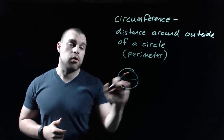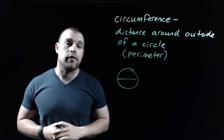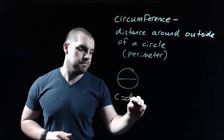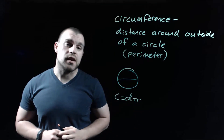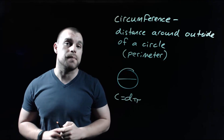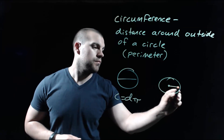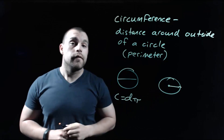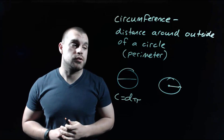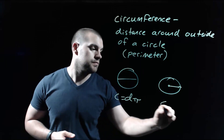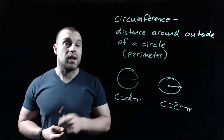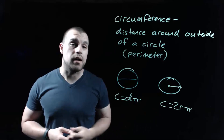Remember, a diameter goes all the way across the middle of our circle, and the circumference formula says that we have to take the diameter of our circle times pi. For our other formula we're going to be given a radius of our circle, and what we do is we take two times the radius times pi.